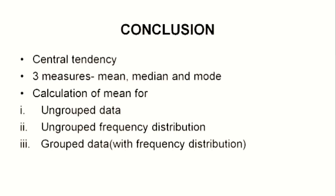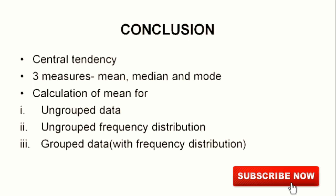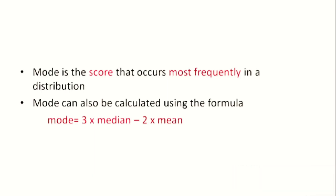In conclusion, central tendency is the tendency of the given scores to centralize to one particular point. There are three types: arithmetic mean, median, and mode. Calculation of mean can be done in three situations: when data is ungrouped, when an ungrouped frequency distribution is given, and when data is grouped into class intervals. Mode is the score that occurs most frequently in a distribution, and can also be calculated using the formula: mode = 3 × median − 2 × mean, provided mean and median are directly given.